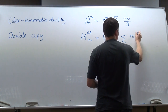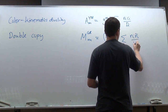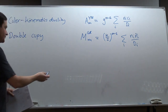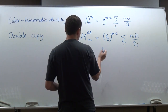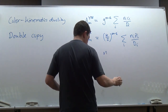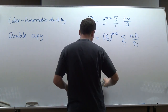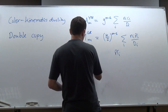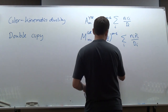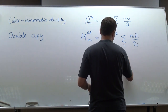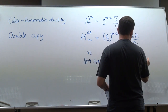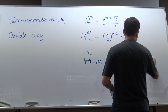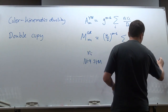The gravity double copy is just two copies of numerators, which in principle can be different. For example, you can pick one copy to be N=4 super Yang-Mills, on both sides, and this will give N=8 supergravity.